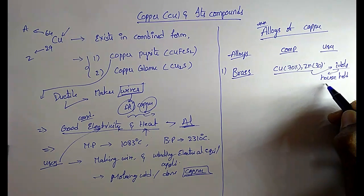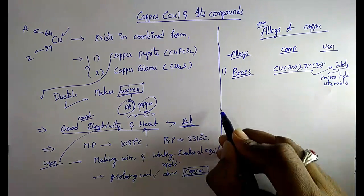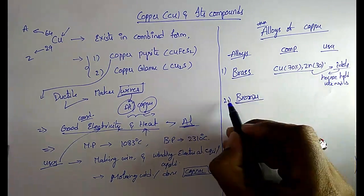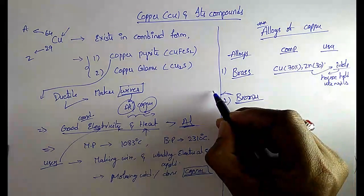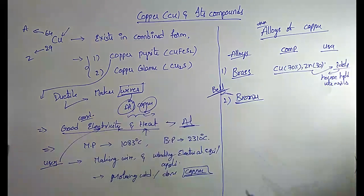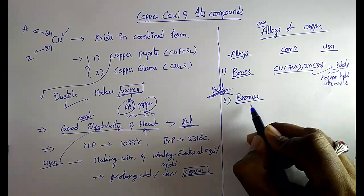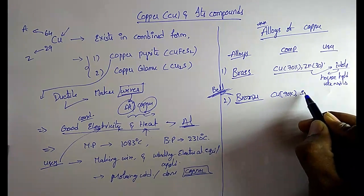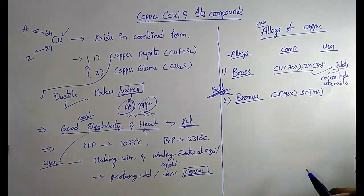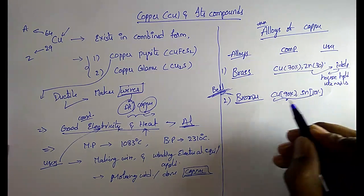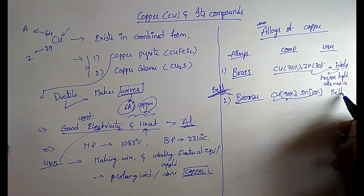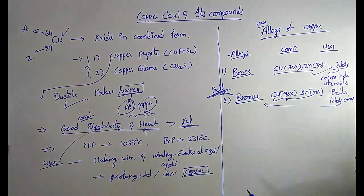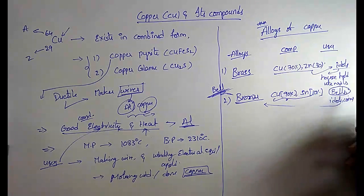The next important alloy is bronze. In olden days, bronze metals were used for making bells because they produce high sound. In bronze, copper is 90% and tin is 10%. It is used for making bells, idols, and coins.